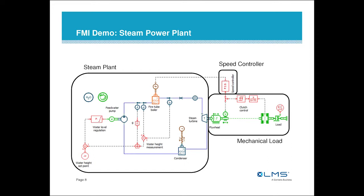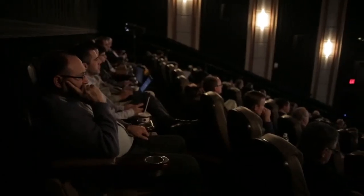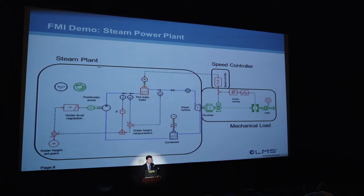For the demo here, we're going to assume we have an Aimsim model of a steam power plant. We'll keep it fairly simple - you have essentially a closed loop system with a water boiler going into a steam turbine, which is powering a flywheel with some given load on that flywheel. We're going to partition the system and pretend that there are different tools doing these different parts of the model. These are the signals that need to be passed back and forth through the FMUs.